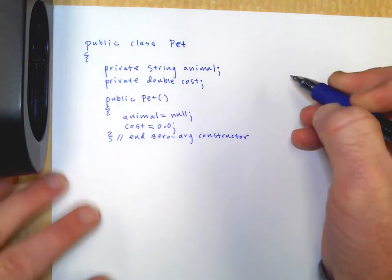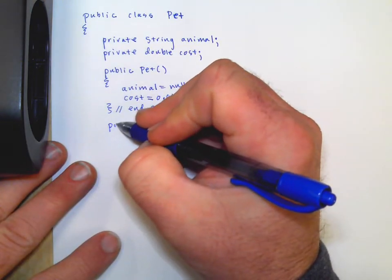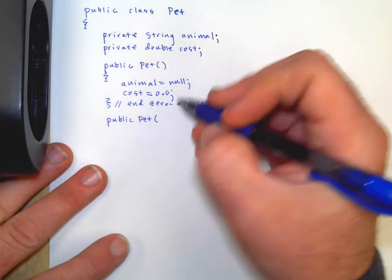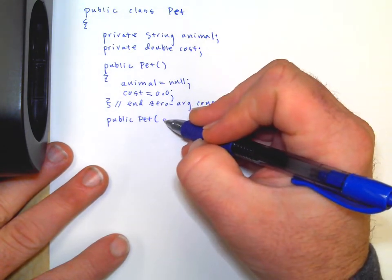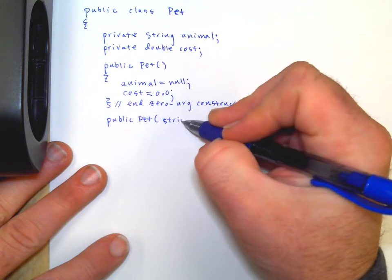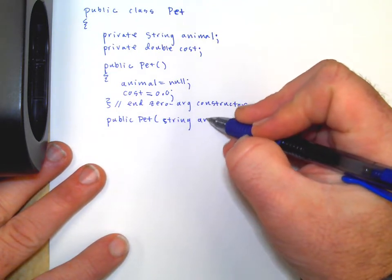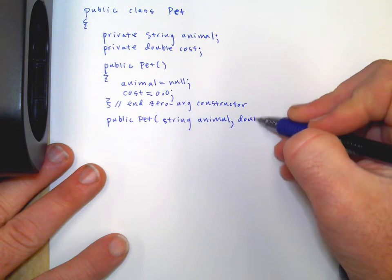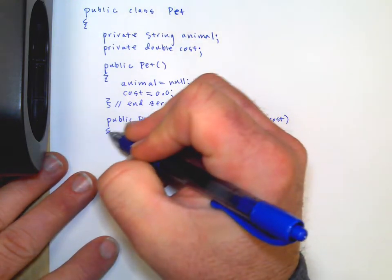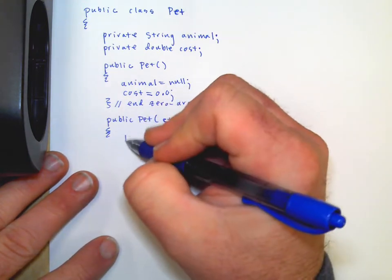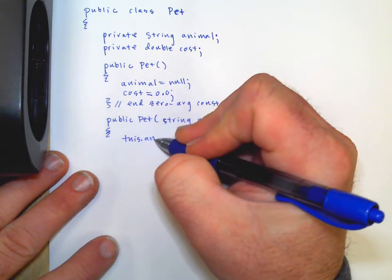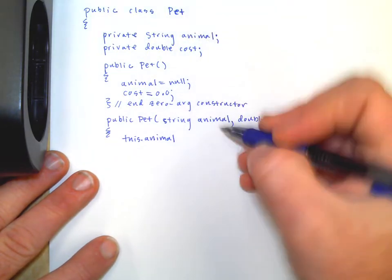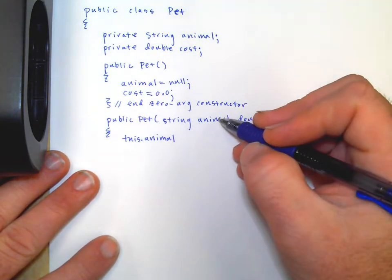We could make a multi argument constructor, public pet and bring in, and I'll talk about some of the things that we've been doing maybe more recently. So a lot of times I would say string and a lot of times I'd say like initial animal, but we could actually just say animal, potentially confusing, but we have some ways around it. And double, instead of initial cost, we could just say cost. We're going to use the same name as private instance variable.